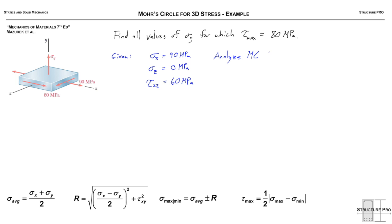What are we given? We're given that Sigma X is 90 MPa, Sigma Z is 0 MPa - we can see there's no normal stress in the Z direction - and the shear stress on the XZ plane, tau XZ, is 60 MPa. So we're going to analyze the Mohr's circle for stresses in the XZ plane.